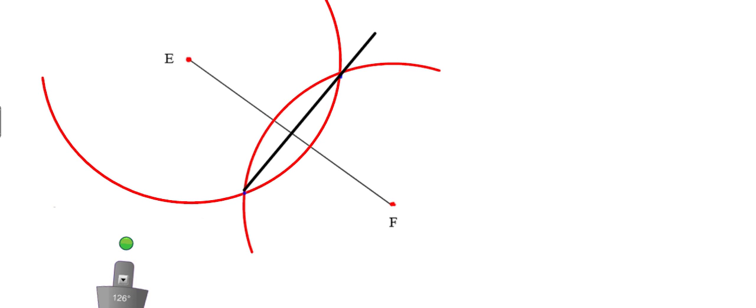What you've done is constructed the perpendicular bisector of line segment EF. Because it's the perpendicular bisector, it makes all of those angles right angles. It also makes the two segments congruent to each other. And in addition to those two things, you've also located by construction the midpoint of line segment EF — all without measuring with a ruler. I think that's really cool.